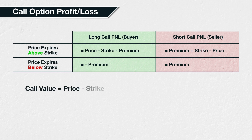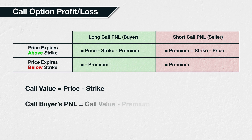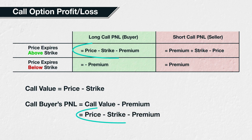The value of a call option that expires in the money is the underlying price at expiry minus the strike price, so we could write this as: call value equals price minus strike. To calculate the buyer's profit or loss, we then just need to subtract the premium they paid from the value of the call option at expiry. This gives us the call buyer's P&L as: price minus strike minus premium.